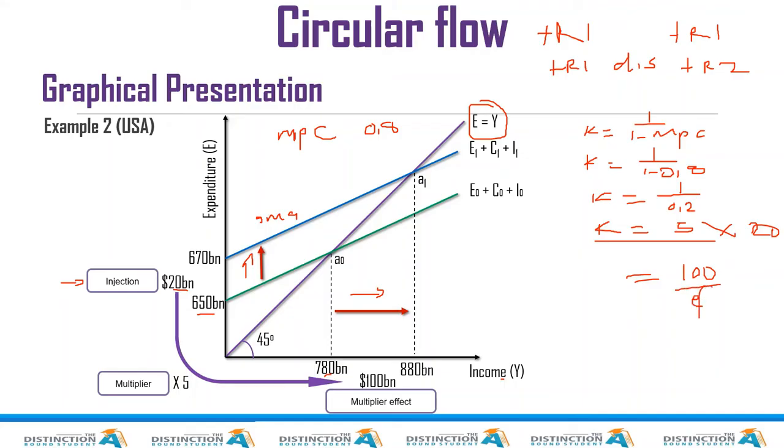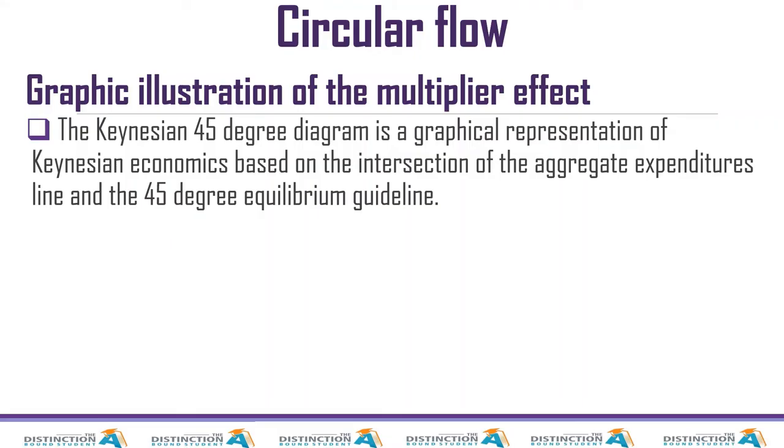As simple as that. So do you understand now? I hope you do. Let's move on. So the Keynesian 45 degree diagram is a graphical representation of the Keynesian economics based on the intersection of the aggregate expenditure line and the 45 degree equilibrium guideline.